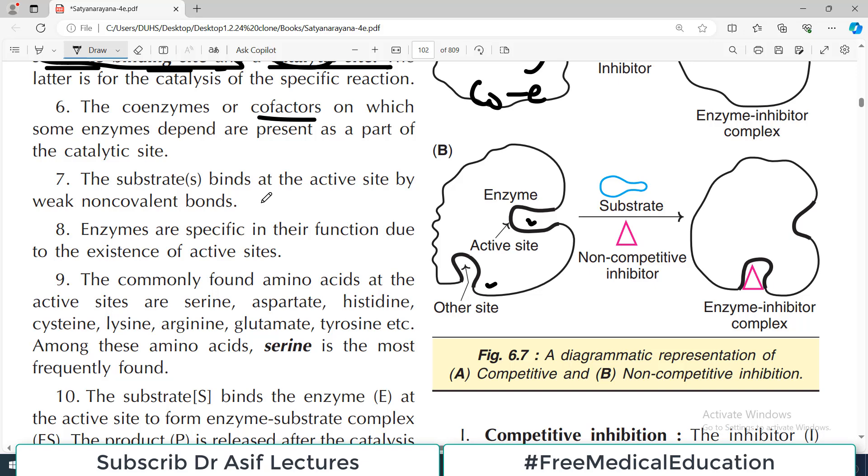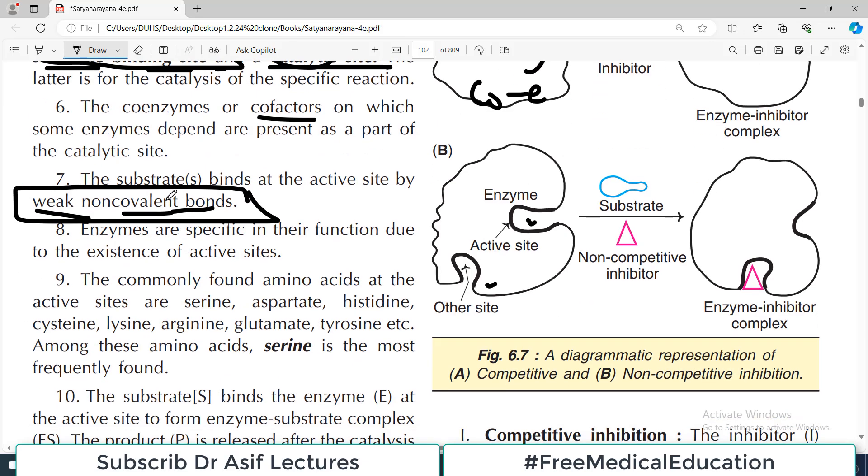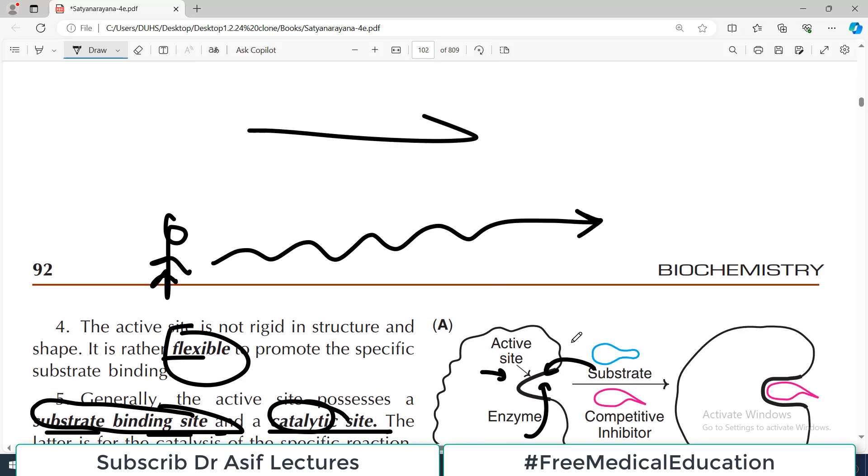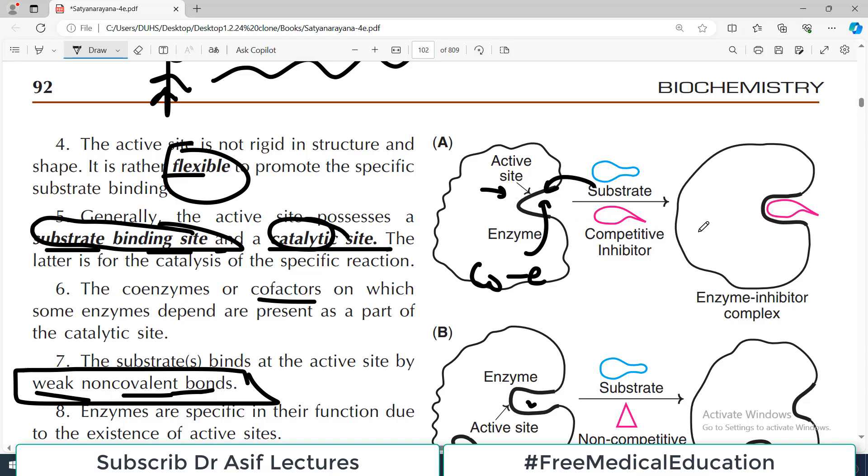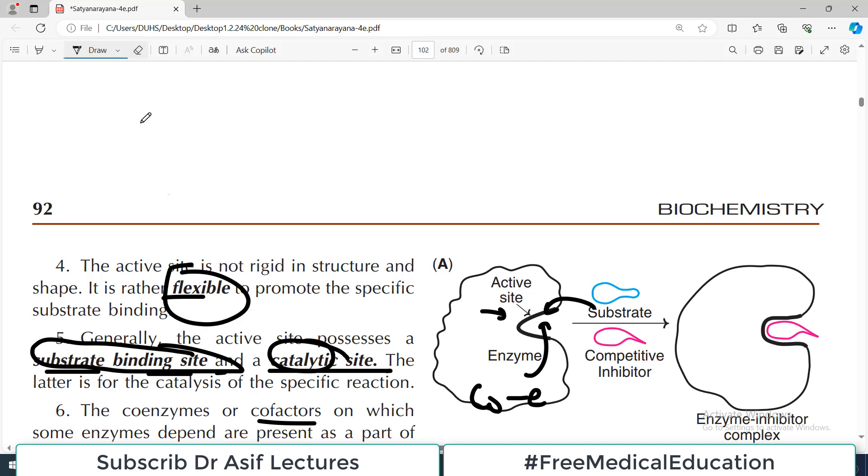The substrate binds at the active site by weak non-covalent bonds. This is why many reactions are reversible - when we need, enzymes and substrate bind; when we don't need, they separate. Enzymes are specific in their function due to the existence of active sites. When we have a specific protein molecule with a specific shape, it will be specific. We also sometimes refer to this as the key-lock model.